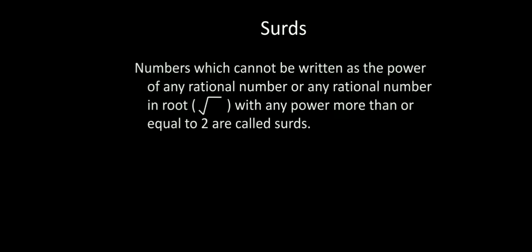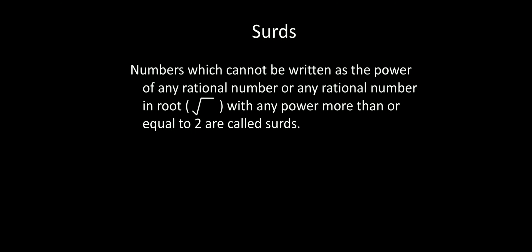What are surds? A simpler definition: numbers which cannot be written as the power of any rational number, or a rational number under a root with any power greater than or equal to 2, are called surds — for example, the cube root of 5, or fifth root of numbers like that.